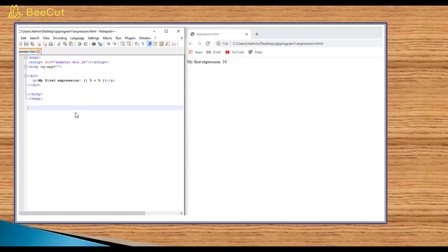Let's see an example. HTML starts here, HTML closes here. Script source equals angular.min.js - this is a local AngularJS file. Then body tag starts here, body tag closes here. ng-app, this directive is used to start the application.